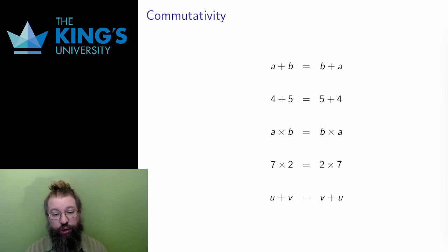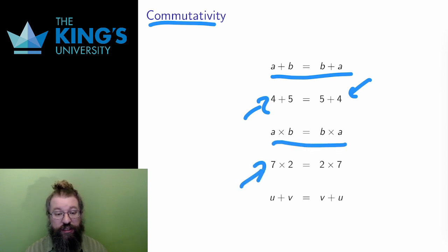An operation is commutative if I can change the order of the operation without changing the result. Addition and multiplication of numbers are commutative. If I add any two numbers, the result is the same regardless of which is first. Four plus five is nine, just as well as five plus four is. Likewise for the multiplication of numbers. Seven times two is fourteen, as well as two times seven.